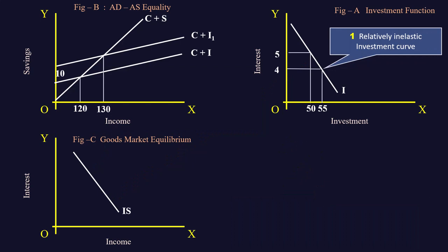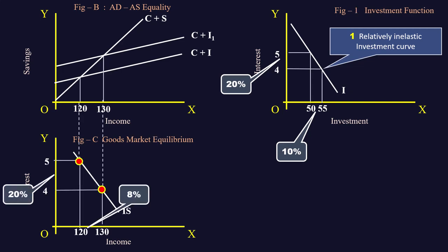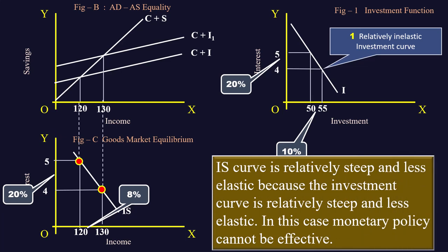Case 1: Relatively inelastic investment curve. In this case, a 20% fall in interest rate causes the investment to increase by 10%. This 20% fall in interest in turn increases the income only by 8%. IS curve is relatively steep and less elastic because investment curve is relatively steep and less elastic. In this case, monetary policy cannot be effective.